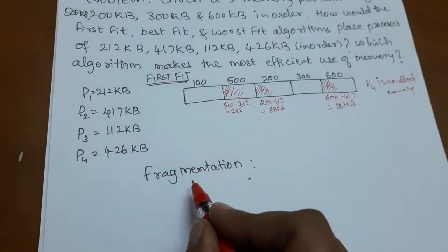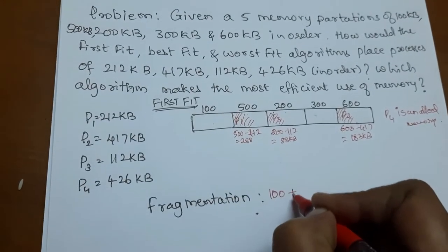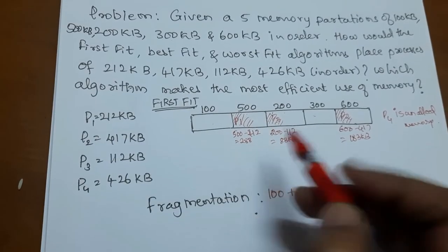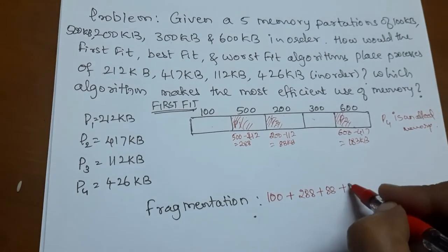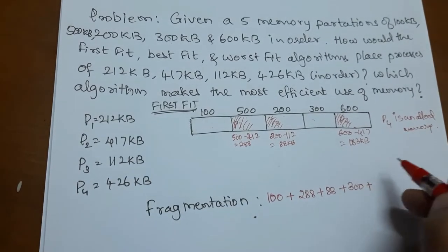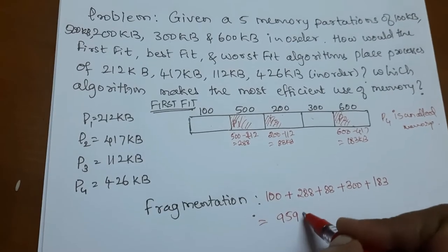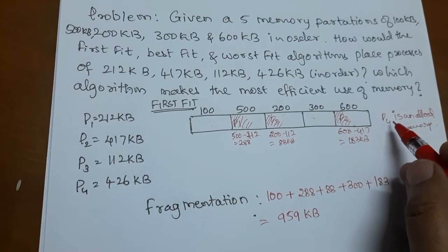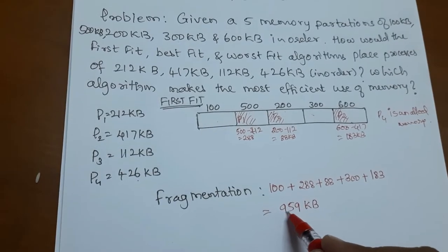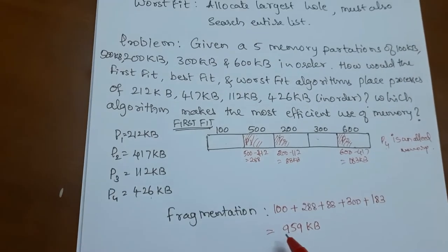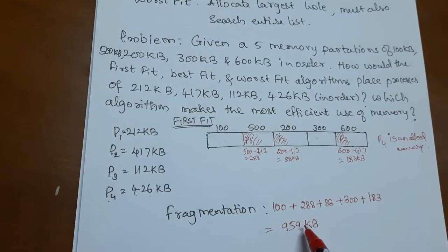Now we will find the leftover memory, which we call fragmentation. The first block is entirely free: 100 KB. From the second block there is a hole of 288 KB, from the third partition a hole of 88 KB, the fourth partition is completely free (300 KB), and from the fifth partition there is a hole of 183 KB. The total fragmentation comes to 959 KB.